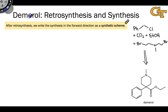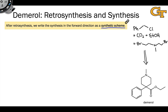Now that we've worked backwards and designed a retrosynthesis of Demerol, it's time to write the synthesis out in the forward direction using what's called a synthetic scheme. A synthetic scheme is different from a reaction mechanism — that's an important point. In a reaction mechanism, we depict reactive intermediates, all the stable species between reactants and products. In a synthetic scheme, we only depict synthetic intermediates: stable compounds isolated between synthetic manipulations. Generally speaking, we only list starting materials, reagents, and products at each step.